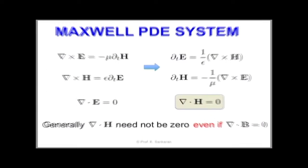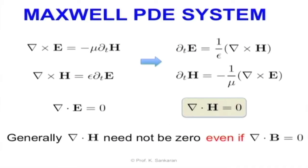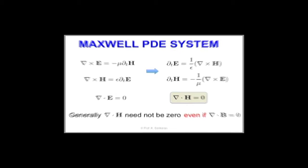We have remarked that it is the divergence of B and not that of H which is always zero. In other words, even when the divergence of B is zero, we might have some value for divergence of H.